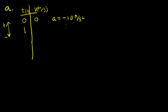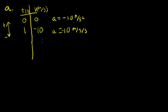If the acceleration is negative 10 meters per second squared, another way to say that is the acceleration is 10 meters per second per second in the downward direction. That means the skydiver is going to be losing 10 meters per second every second he's falling. After one second, the skydiver's velocity is negative 10 meters per second, or 10 meters per second downward. After two seconds, he's at 20 meters per second downward. After three seconds, he has a downward velocity of 30 meters per second.